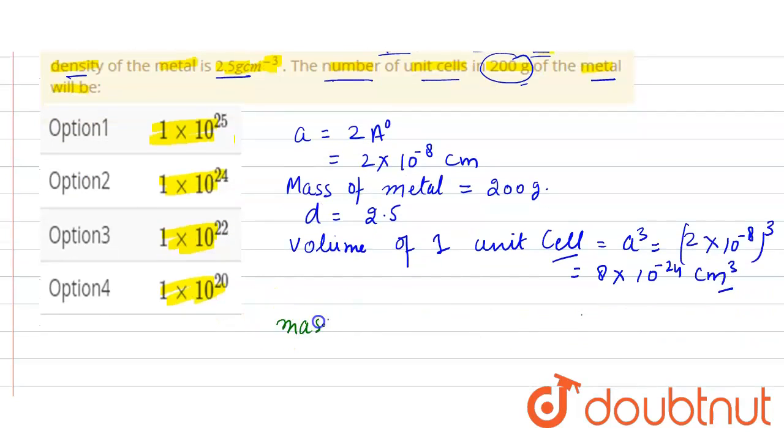So as we know that density is equal to mass upon volume, so we need to find the mass of one unit cell first, which is equal to density multiply by volume.